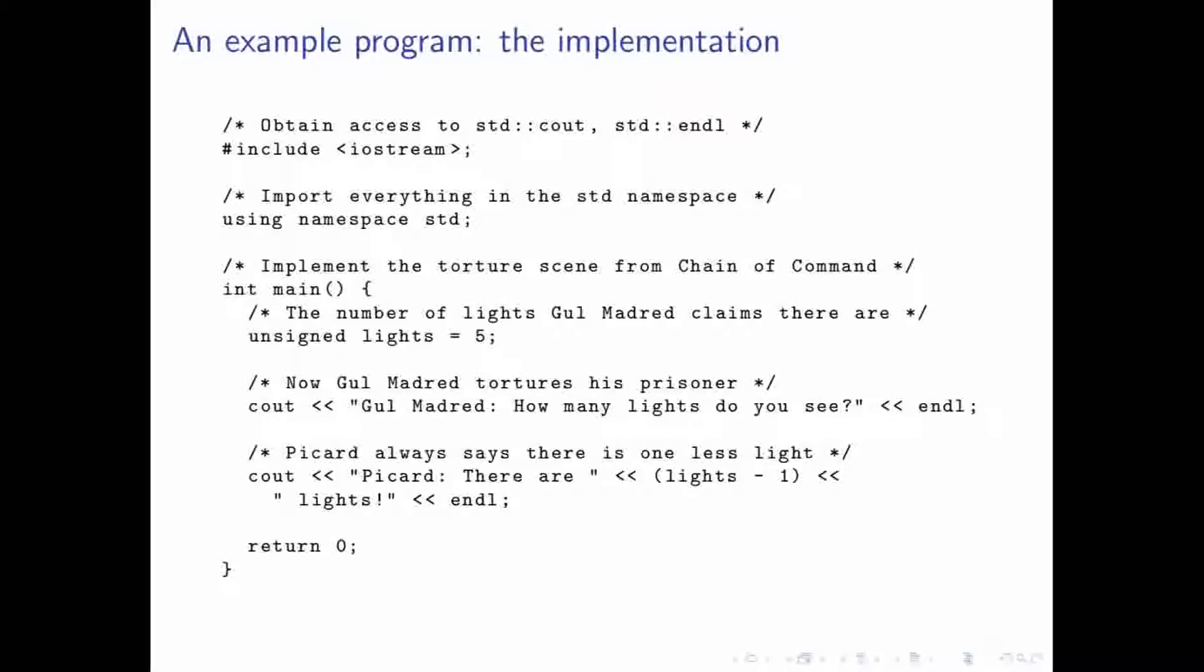And then we want to print out how many lights, or Gul Madred asking how many lights there are. And Picard will say, well, there's one less light than the number specified in lights. So you can go up here and actually replace five with whatever number you want, as long as it's not zero. And it'll work. And so, you might have noticed here that for these string literals, we have spaces on the right end of the first and on the beginning of the second. And that's because those spaces wouldn't get inserted otherwise. So, what we would end up with is our four lights, in this case, being one word if we didn't have those.